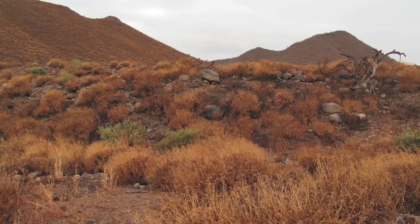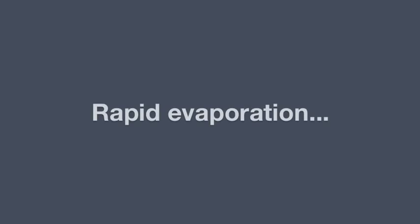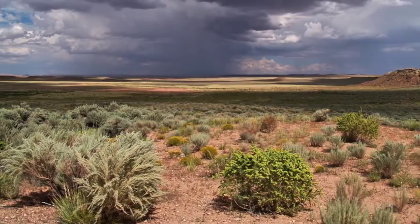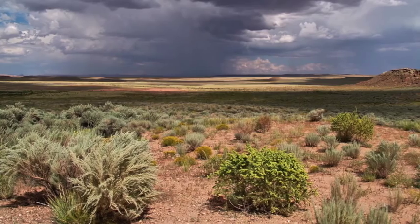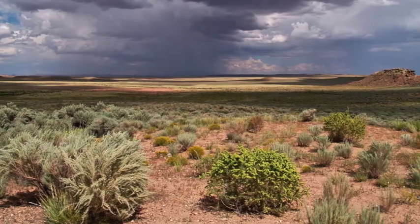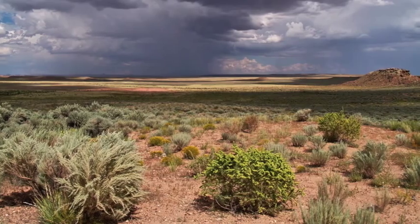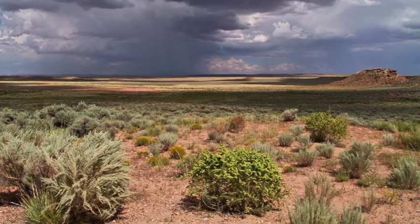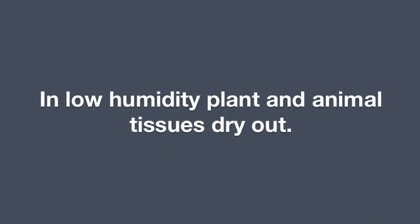Another key effect of low humidity is rapid evaporation. When it does rain, the water evaporates. It doesn't soak deeply into the soil, and the soil dries out quickly. So water isn't available for biological use very long. At the same time, in low humidity, plant and animal tissues dry out and get dehydrated, so there's a greater need for water that simply isn't available.